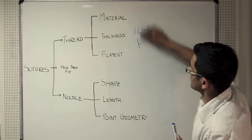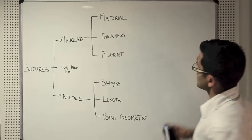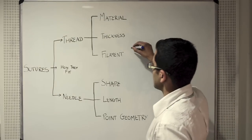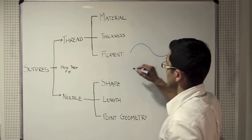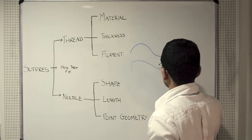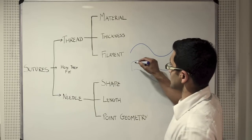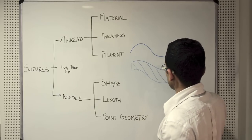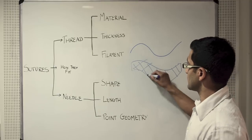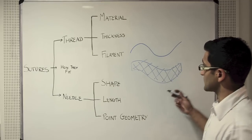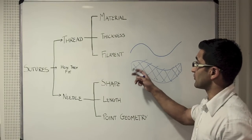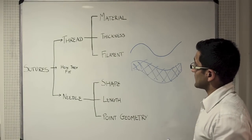Finally, in terms of thread, the last thing to think about is composition in terms of filaments — this refers to how many filaments make up the suture. Certain sutures are monofilamentous, meaning there is a single filament which makes up the entire suture, whereas others are braided, meaning there are many different filaments interweaving in a braided fashion.